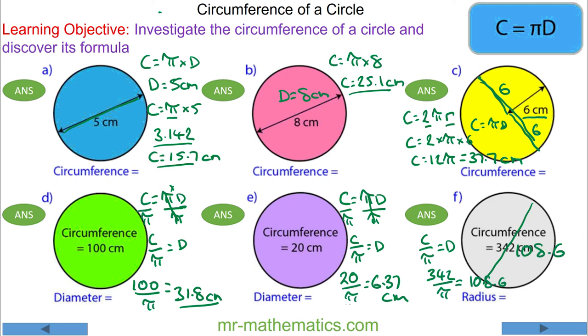We want the radius, which is half of that, so we'll do 108.6 divided by 2, and the radius will be 54.3 centimeters.